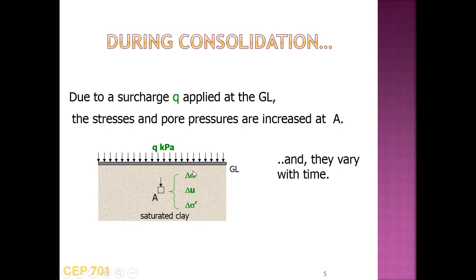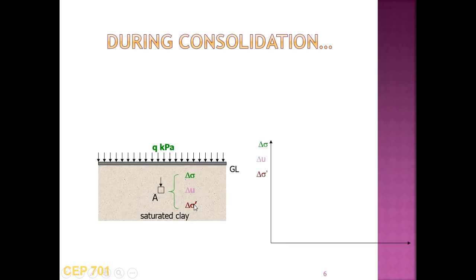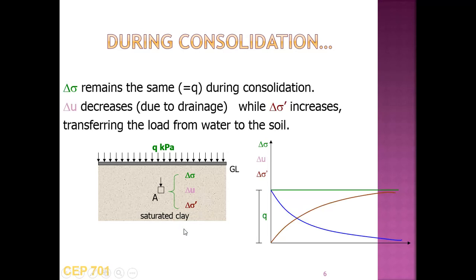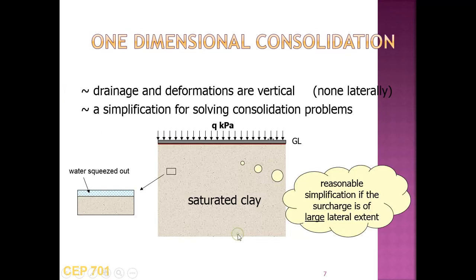When a soil is loaded externally, total stress remains constant, pore water pressure decreases, and effective stress increases. This is shown in a graph of total stress, pore water pressure, and effective stress over time. Consolidation is one-dimensional in nature as assumed by Terzaghi, so drainage and deformation are vertical — a simplification for solving consolidation problems.